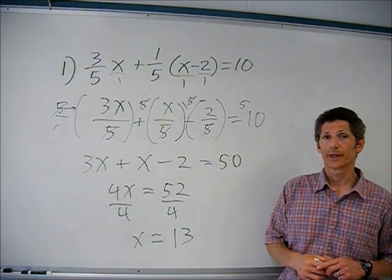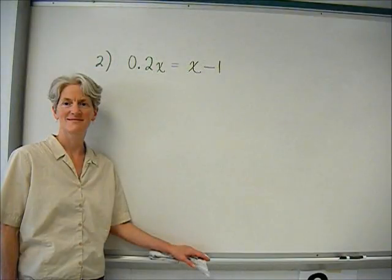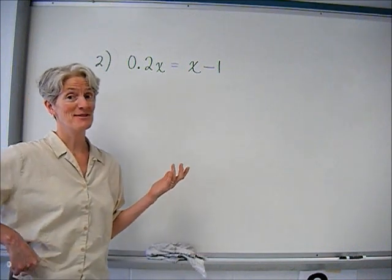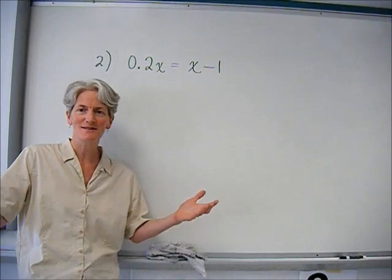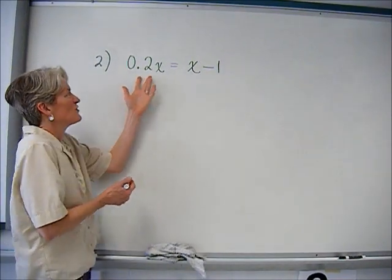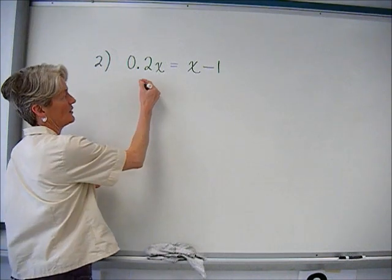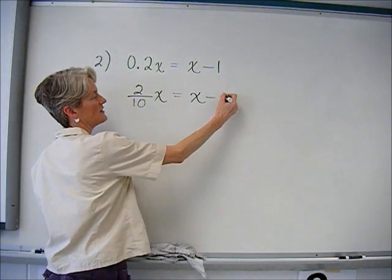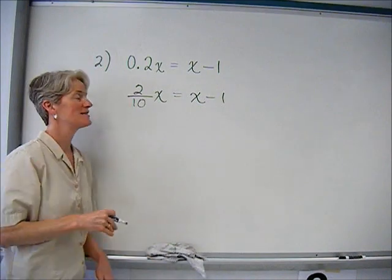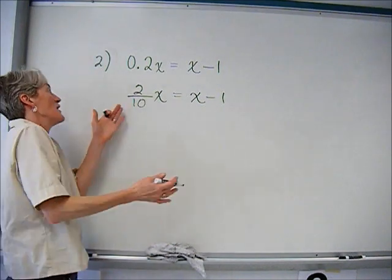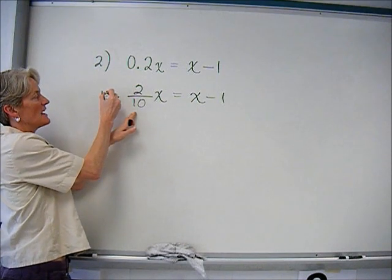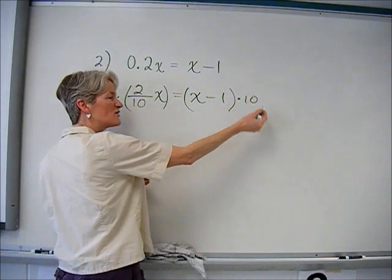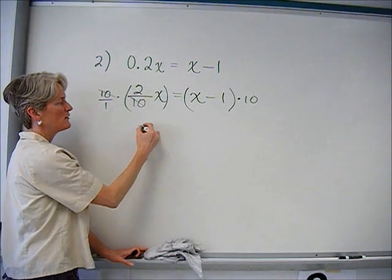Let's look at number two. It's kind of like number one except that we have a decimal. But aren't decimals other ways of writing fractions? This is two-tenths, so I could think of that as two-tenths times x equals x minus one. Let's just get rid of that denominator — if I want to get rid of that ten I can multiply by ten over one. Whatever I do to one side I have to do to the other, and I have to distribute that to everything.